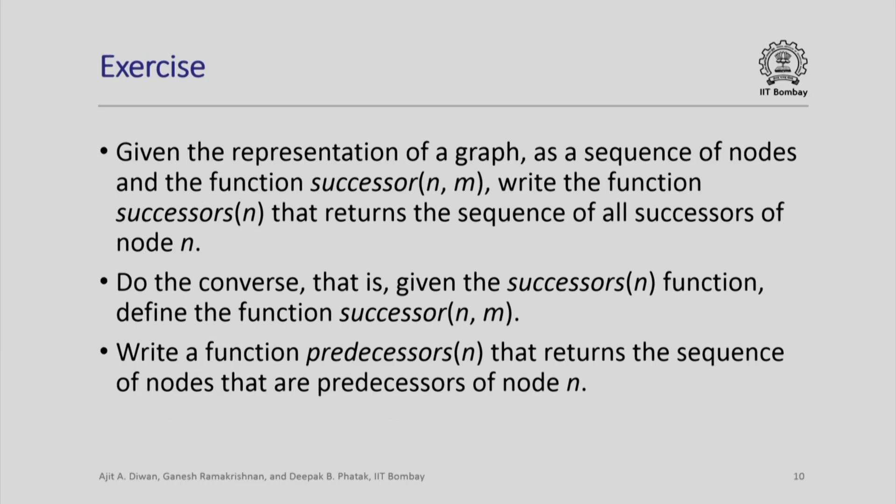Here are some exercises. Assume you are given the representation of a graph as a sequence of nodes and a function successor(n, m) which tells us whether m is a successor of n. Using this, we can write a function successors(n) that returns the sequence of all successors of a node n, and conversely, given successors(n) we can write a function to determine whether m is a successor of n. We can also write a function predecessor(n) returning all predecessors of a given node n, or predecessor(n, m) telling whether m is a predecessor of n. All functions on graphs can be defined using just these two primitives.